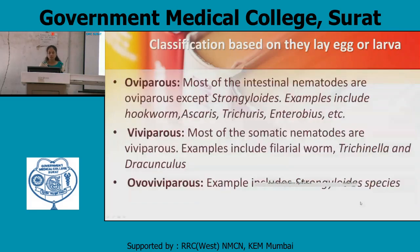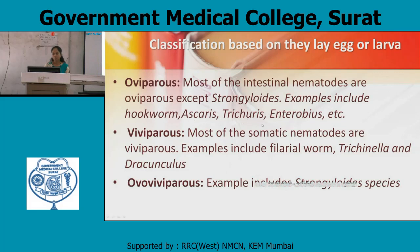The third classification is based on whether they lay eggs or larvae. They are classified into oviparous, viviparous, and ovo-viviparous. Oviparous describes most intestinal nematodes except Strongyloides — examples include hookworm, Ascaris, Trichuris, and Enterobius. They lay eggs. Viviparous means they lay larval forms; most somatic nematodes are viviparous — examples include filarial worms, Trichinella, and Dracunculus. Ovo-viviparous examples include Trichostrongylus species.